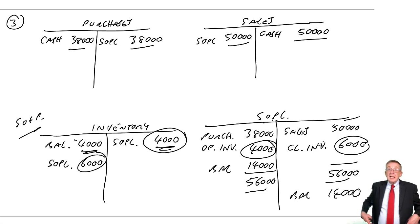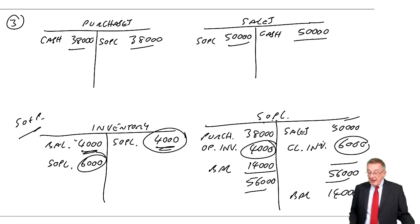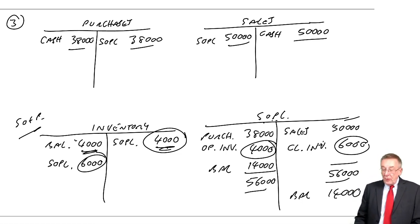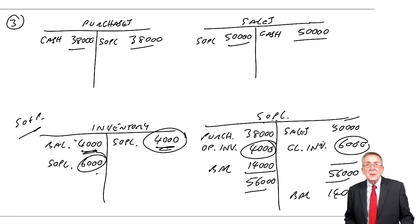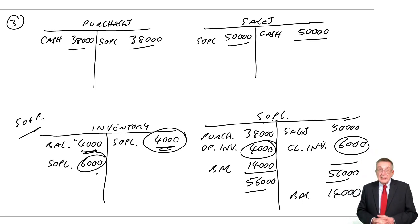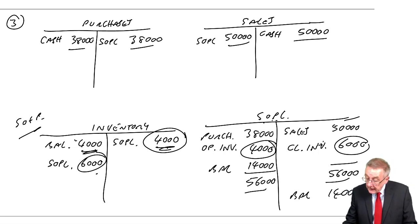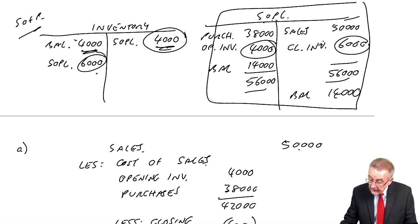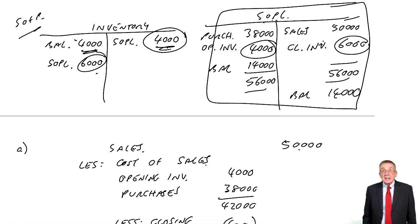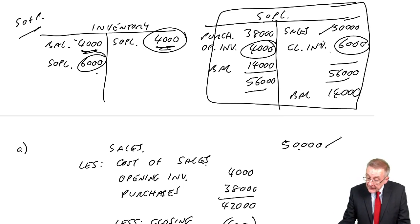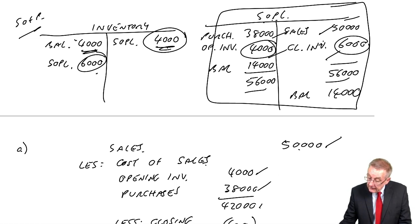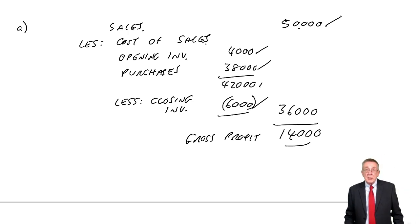There are two things before I leave this lecture. Some people say: instead of crediting with 4,000 and then debiting with 6,000, why don't we just debit with the difference of 2,000 and credit statement of profit or loss with 2,000? It'll work — and it will. But what we've done is much neater. Remember, the pretty statement of profit or loss is rewriting the T-account. Having done the T-account, we've got everything that we need: sales 50,000, opening inventory 4,000, purchases 38,000, closing inventory 6,000. It's just much neater to do it the way I've shown.